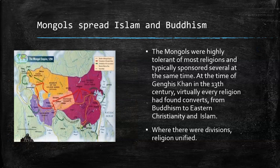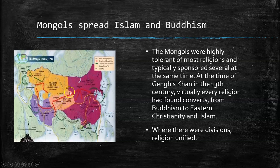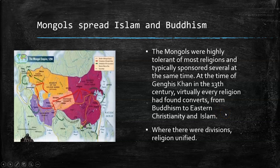Another thing we'll learn about is the religious significance of the Mongols. As the Mongols spread, they broke into four parts, or Khanates, and the Khanates wound up taking different identities. When the Mongol Empire broke up, this division was probably at the root of it, but what was left behind were different religious traditions we still see in modern times. The Mongols were highly tolerant of most religions, typically sponsoring several at once. At the time of Genghis Khan in the 13th century, virtually every religion had found converts — from Buddhism to Christianity and Islam. Think of the Mongols as a great wave: waves recede, and what was left behind was a completely different world, including in religion.